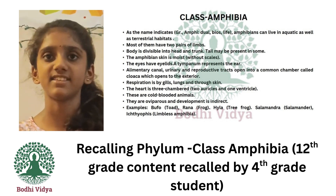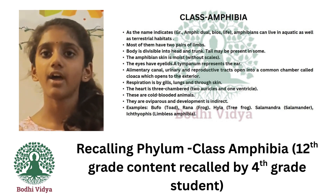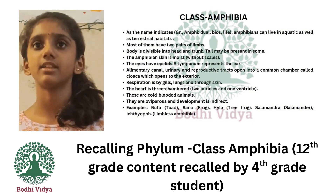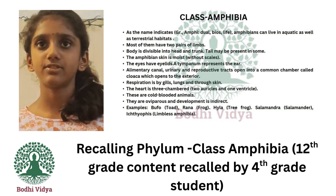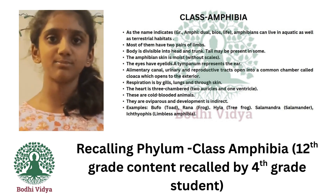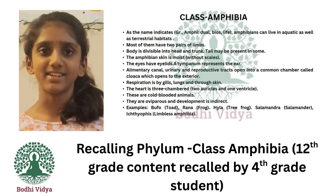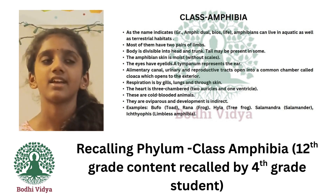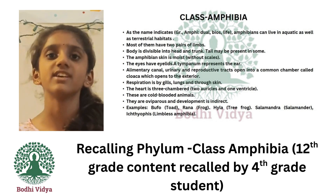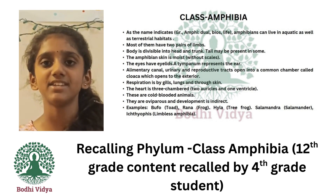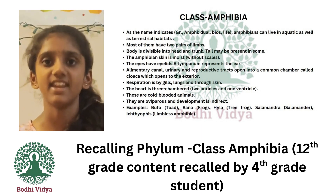Number 8: These are cold-blooded animals. Number 9: They are oviparous and development is indirect.